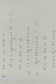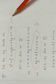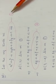Let the required circle be x squared plus y squared plus 2gx plus 2fy plus c equal to 0 — equation 1.